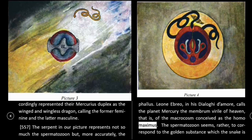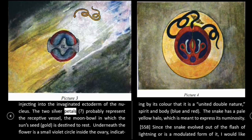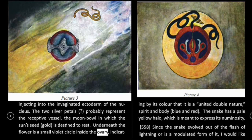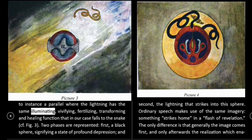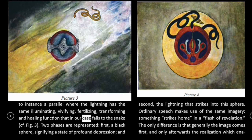557: The serpent in our picture represents, not so much the spermatozoan, but, more accurately, the phallus. Leon Ebrio, in his Dialogue de Amore, calls the planet Mercury the membrum virile of heaven — that is, of the macrocosm conceived as the Homo Maximus. The two silver petals probably represent the receptive vessel, the moonbowl in which the sun's seed, gold, is destined to rest. Underneath the flower is a small violet circle inside the ovary, indicating by its color that it is a united double nature — spirit and body, blue and red. The snake has a pale yellow halo, which is meant to express its numinosity. 558: Since the snake evolved out of the flash of lightning, or is a modulated form of it, I would like to instance a parallel where the lightning has the same illuminating, vivifying, fertilizing, transforming and healing function that in our case falls to the snake. Two phases are represented: first, a black sphere signifying a state of profound depression; and second, the lightning that strikes into the sphere. Lightning signifies a sudden, unexpected, and overpowering change of psychic condition.